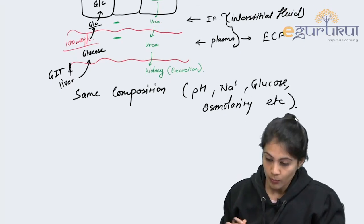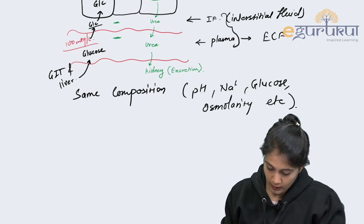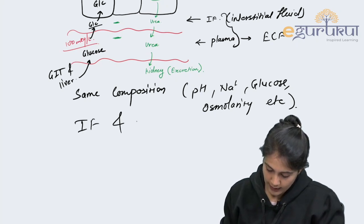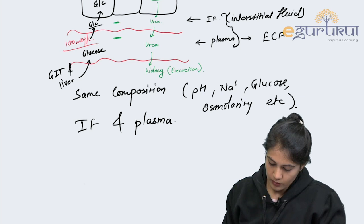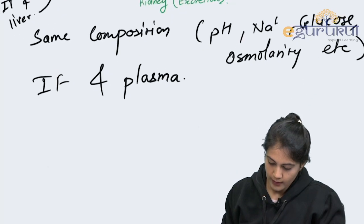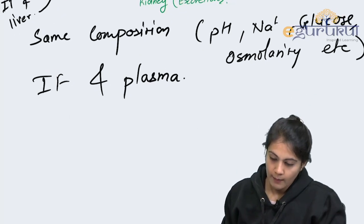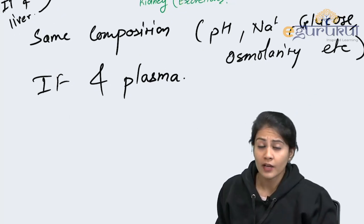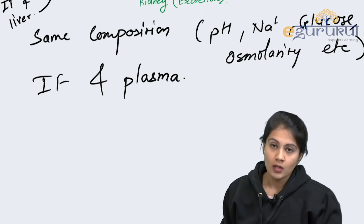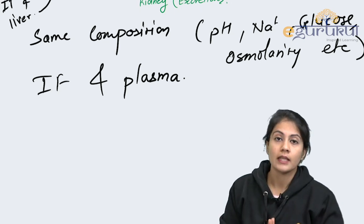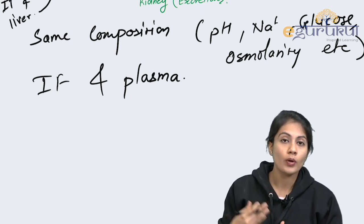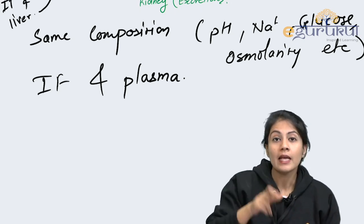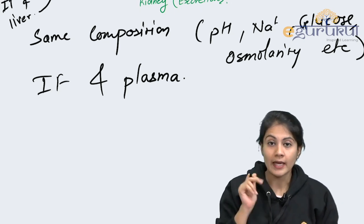There is the same composition of interstitial fluid and plasma. In the plasma, if something is more, that will go inside the cell — there are some exceptions.